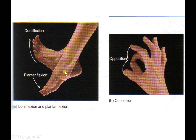Dorsiflexion is when the foot goes up, and plantar flexion is pointing the toes or foot down. Opposition is a primate thing where the thumb and your fingers are able to come together — that's called opposition.